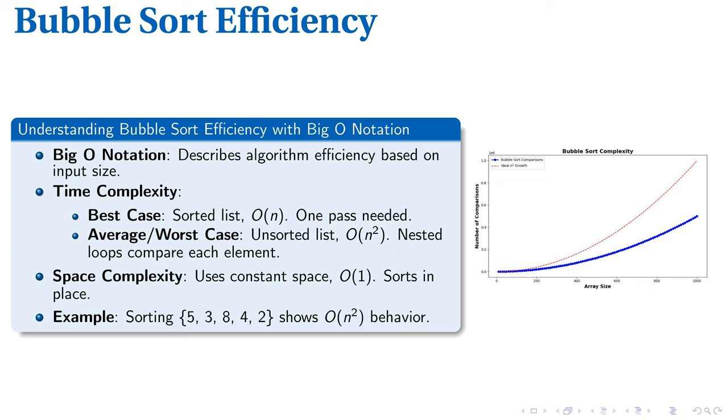Notably, bubble sort does allow us to conserve space, performing sorts directly on the input dataset, hence its space complexity is a constant O(1).